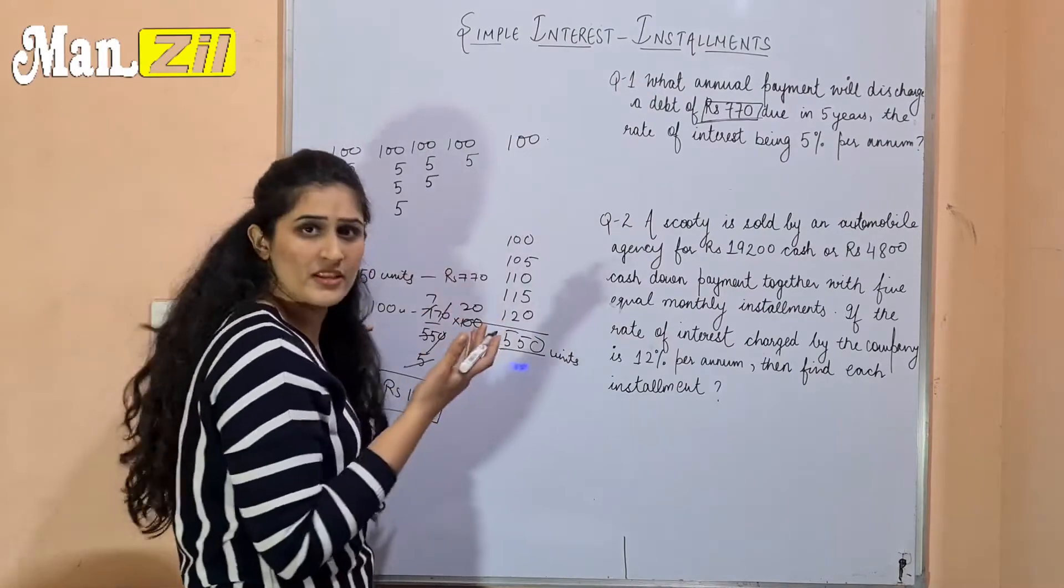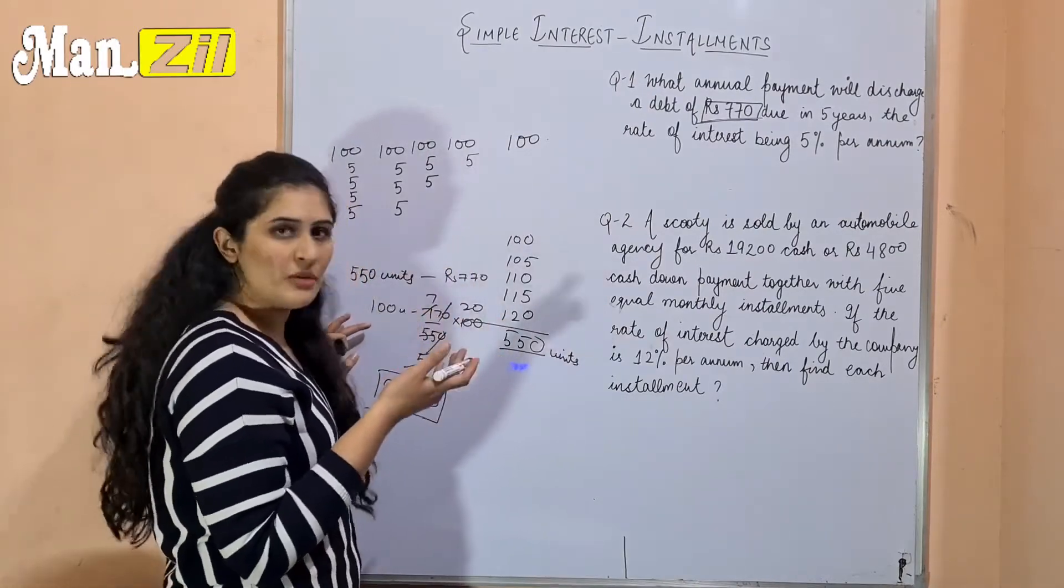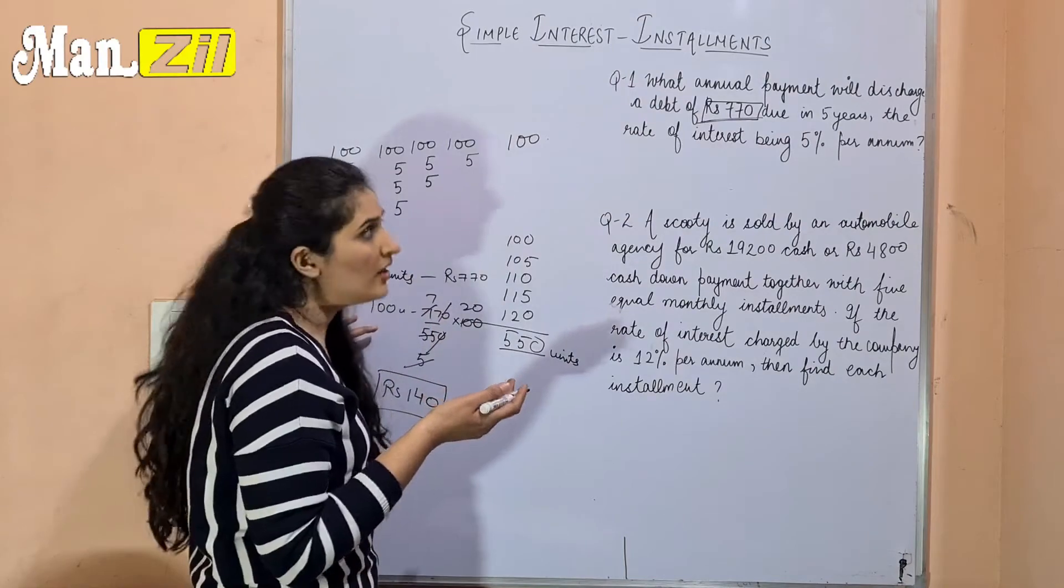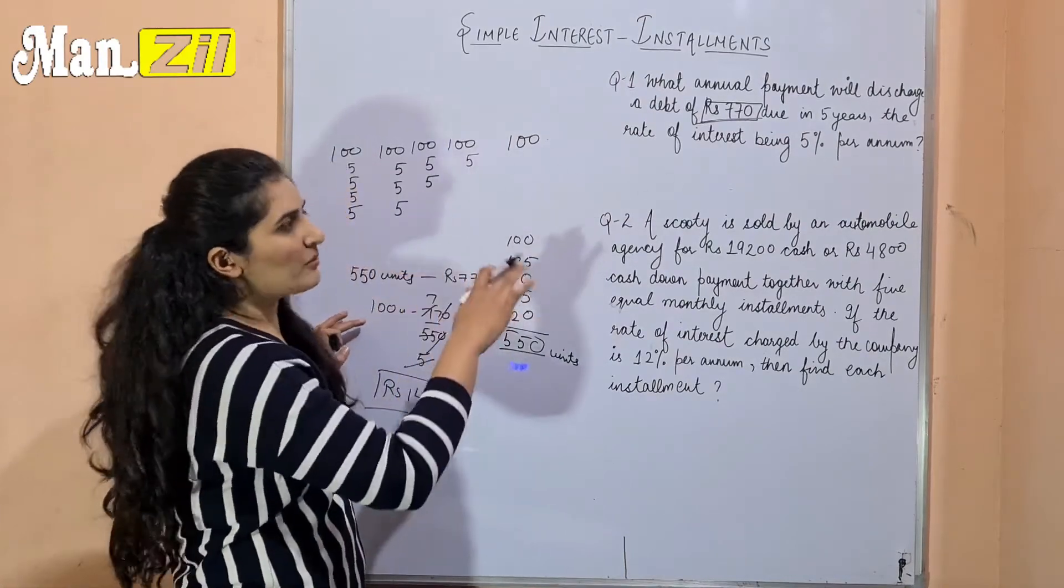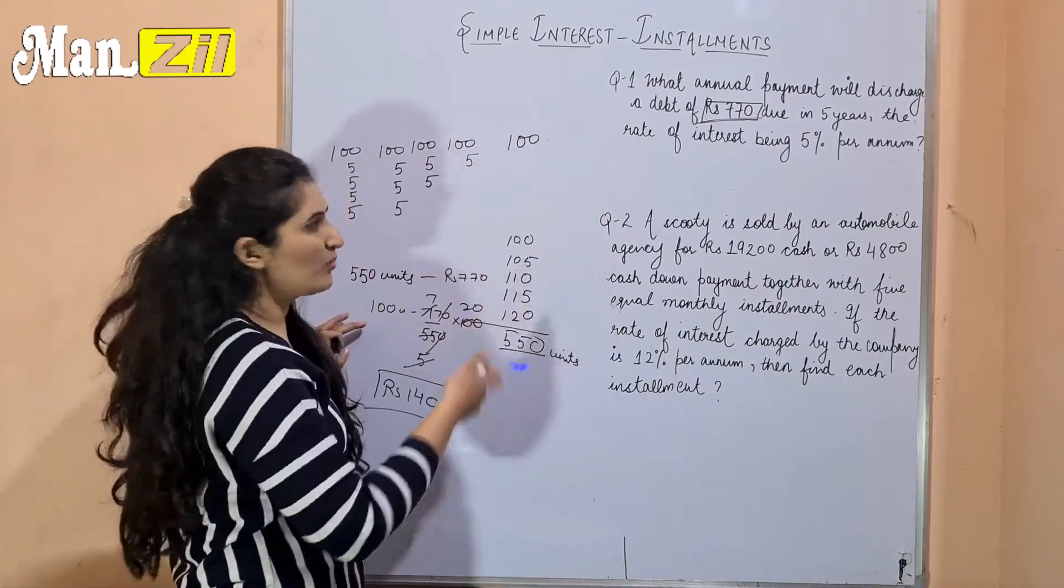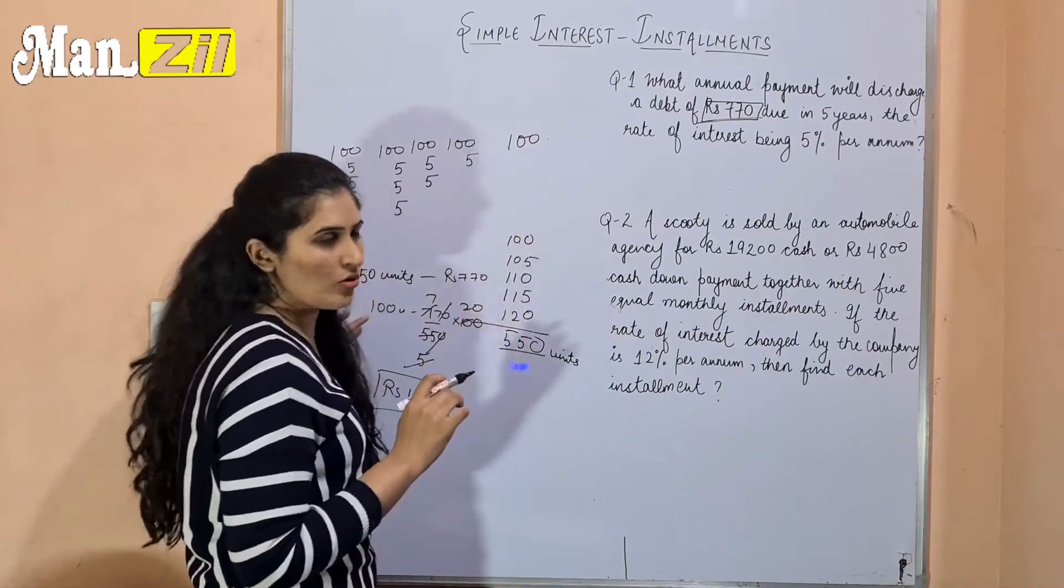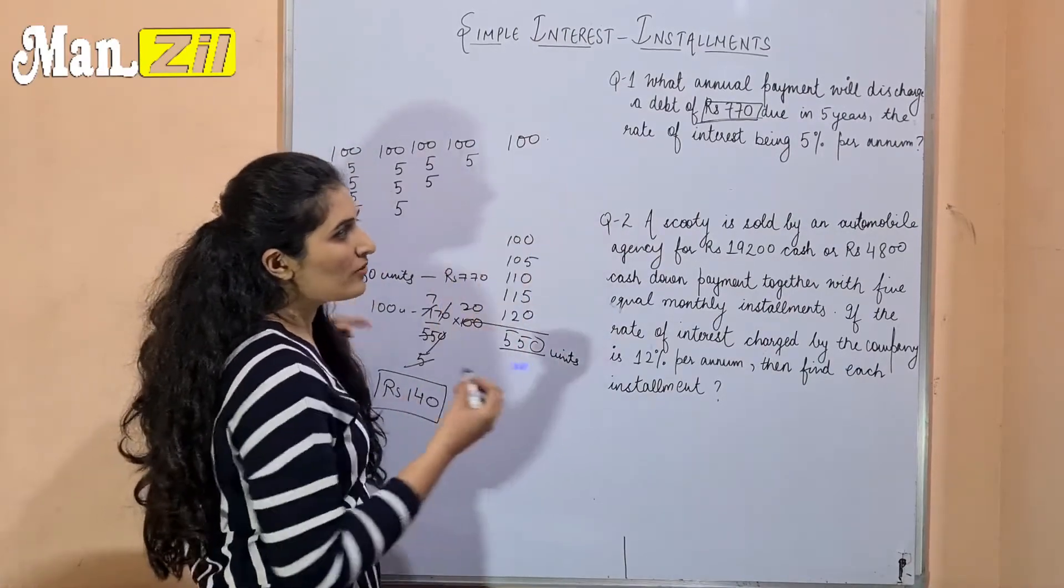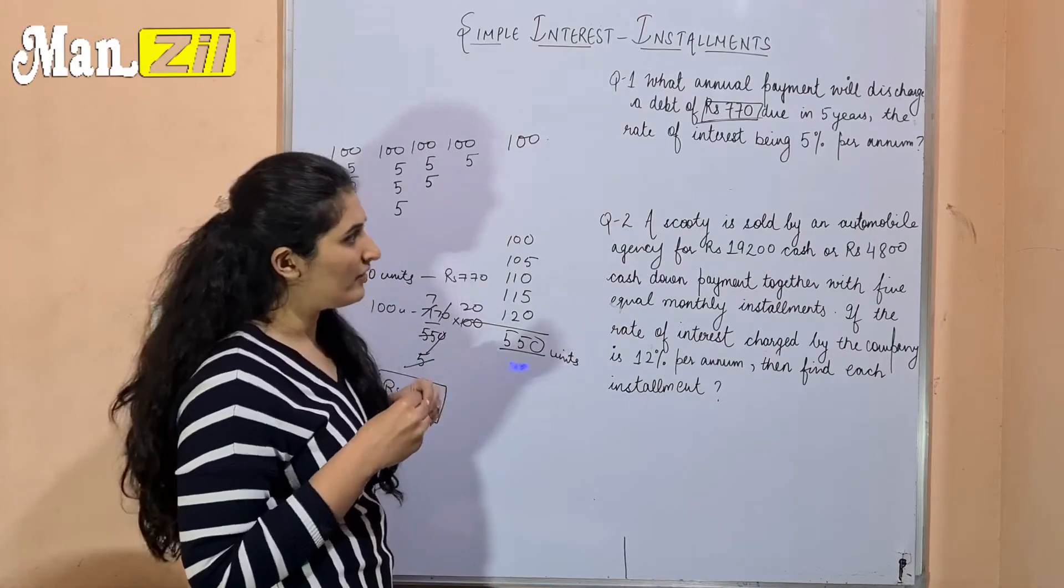This method is much better because we don't have to use the lengthy method. We just assume 100 and our question will be easily solved. Now the second question is of moderate level.